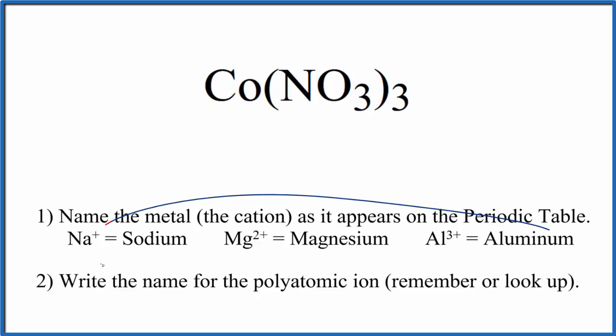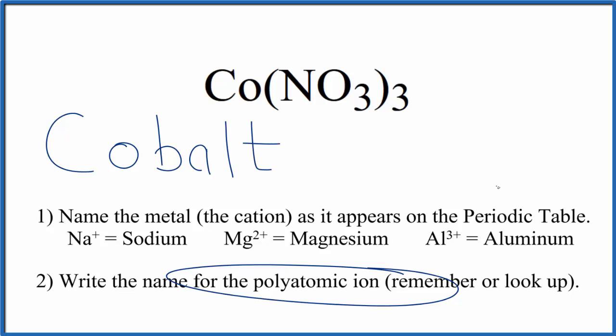We're going to use these rules to write the name for Co(NO3)3. First, we write the name of the metal as it appears on the periodic table - Co, that's cobalt. Next, we write the name for the polyatomic ion. You either remember that NO3 is the nitrate ion, or if you're allowed, you look it up.